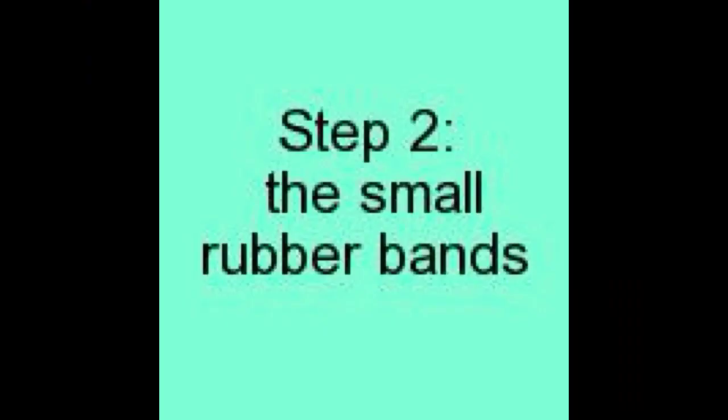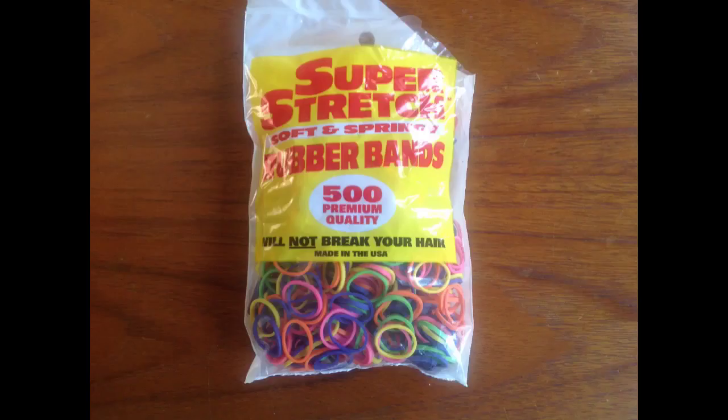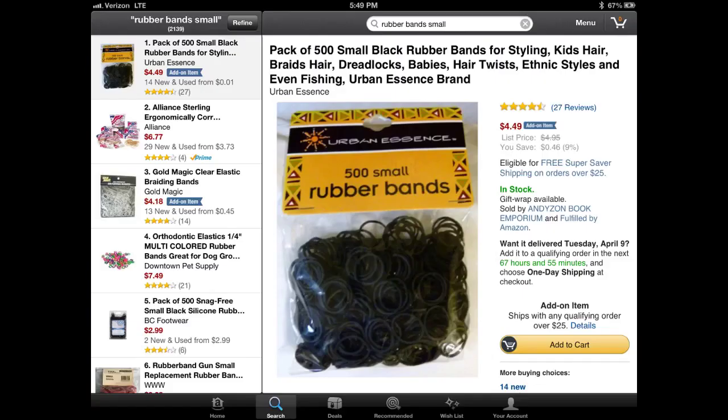The second step is to source the small rubber bands. You can buy these in the drugstore and they're just called small. They're usually used for making small braids. You can also buy them online, also just called small, and I bought this pack at Amazon.